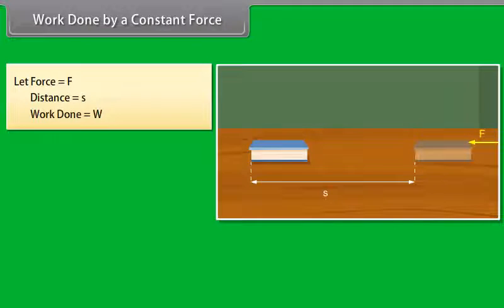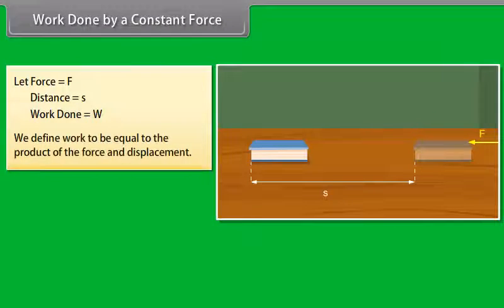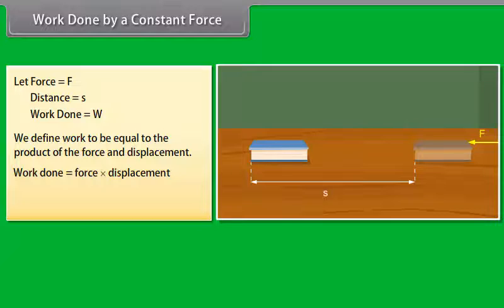Let W be the work done. We define work to be equal to the product of the force and displacement. Work done is equal to force into displacement, or W equals F into S.